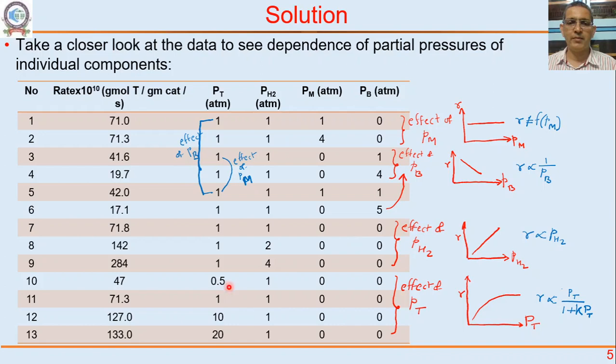Look at these last four rows. Partial pressure of toluene is 0.5, 1, 10, 20. As partial pressure of toluene increases, the rate increases, but at high partial pressure of toluene the rate is practically the same — doubling the pressure gives only a very small change. So rate is first order with respect to toluene at low concentrations and practically zero order at high concentrations. If you plot rate versus partial pressure of toluene, it looks like a Langmuir-type curve.